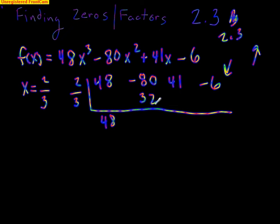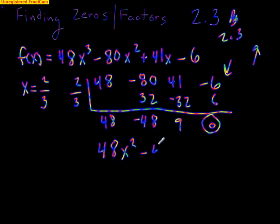So that's a 32 that goes right here. -80 + 32 is -48. So I get a nice 48 right there. And 2/3 times 48 is going to be a -32 this time. And 41 + (-32) is 9. And I know this is going to be crazy, but guess what? 2/3 times 9 is 6. That's right. So you end up getting a remainder of 0 right here, just like we were supposed to because I told you that was a zero from the very beginning.